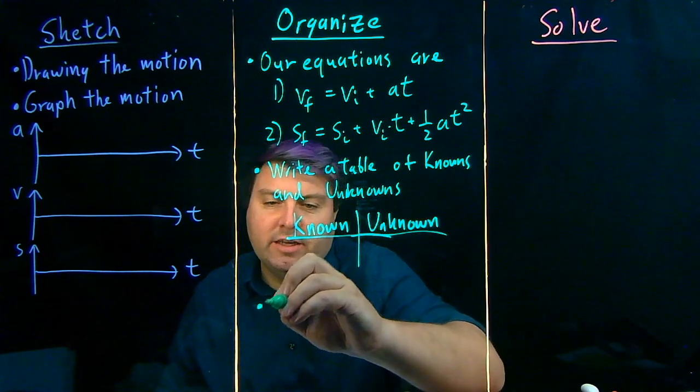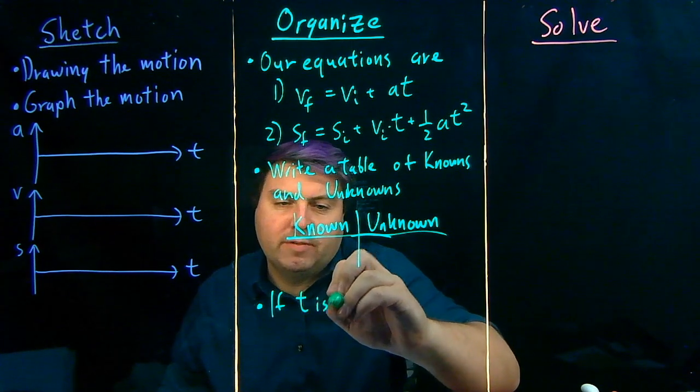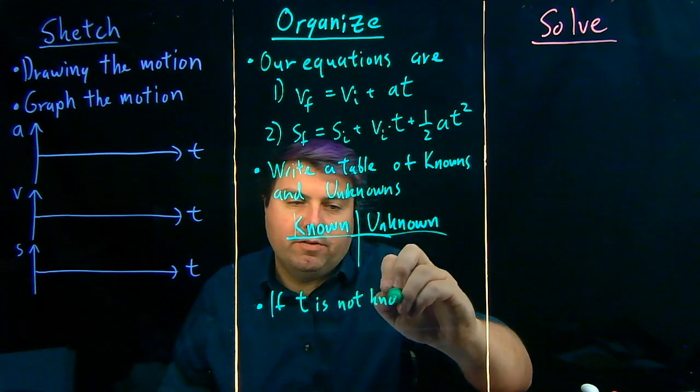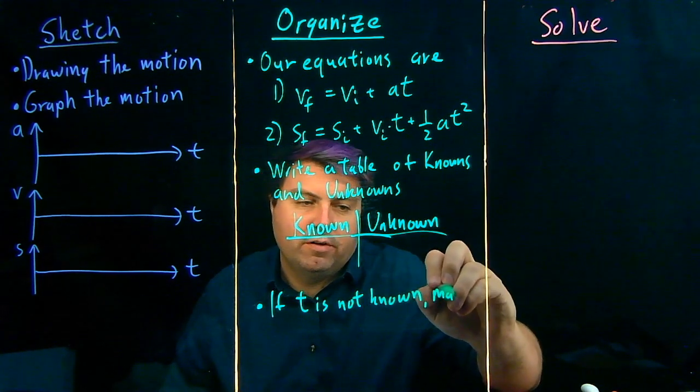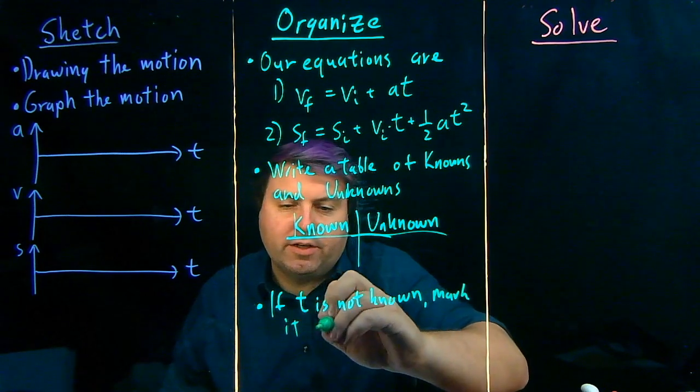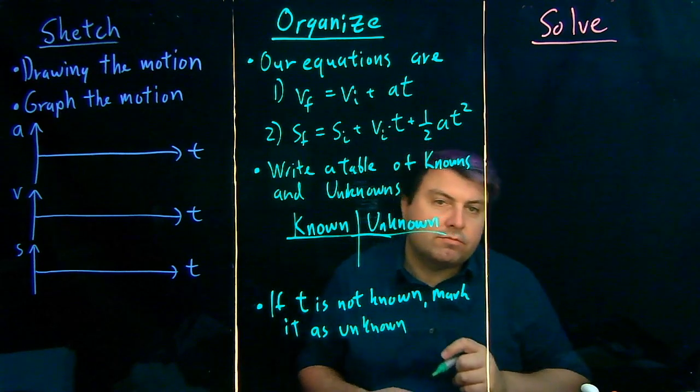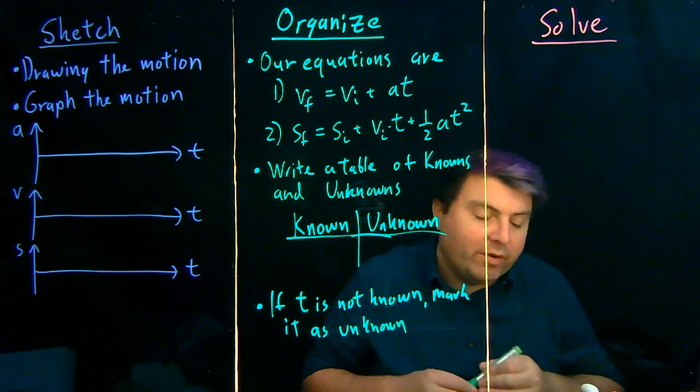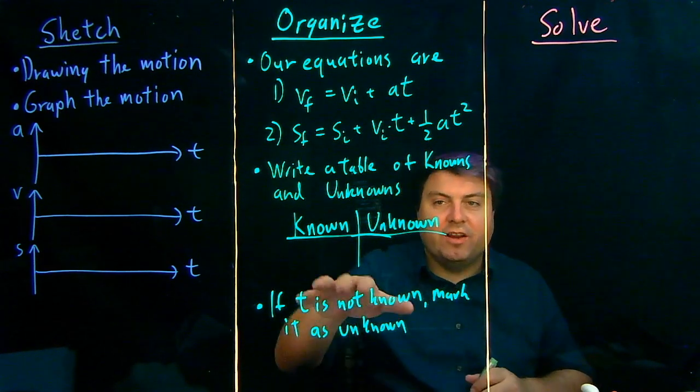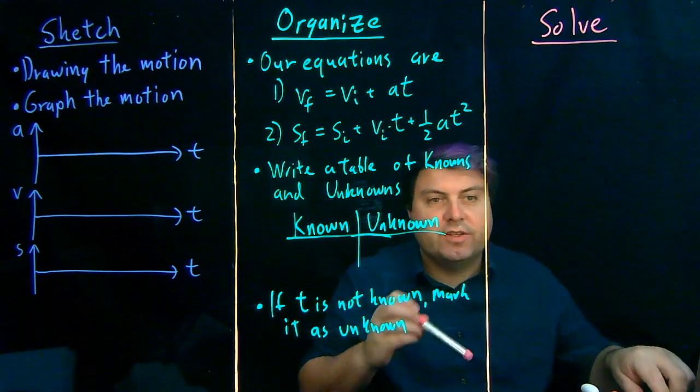And then our last thing is, if time is not known, we want to mark it as unknown. So very often we will not know time, and time is a very good unknown that we will need to solve for during this.